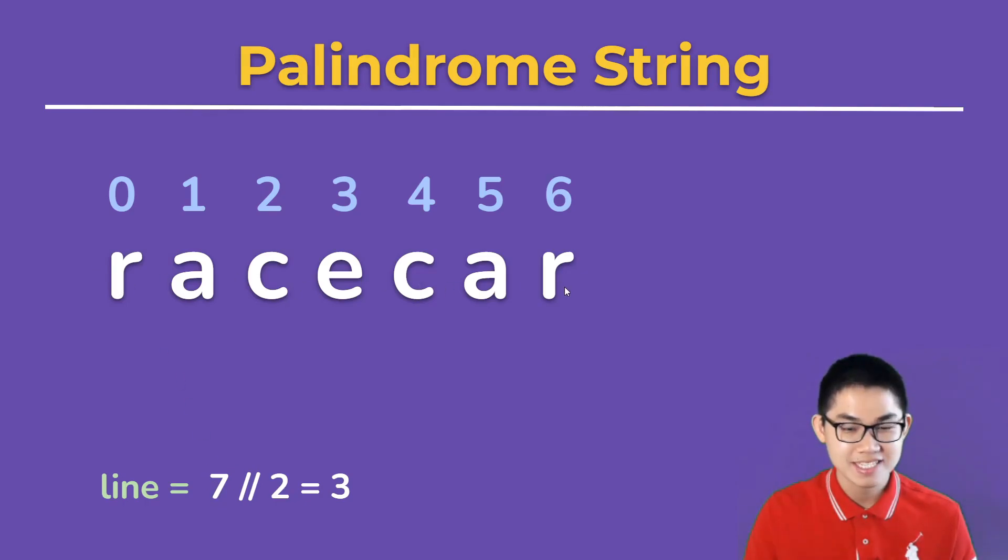Then we floor divide by 2. So what is floor divide? 7 divided by 2 gives you 3.5, and 3.5 rounded down gives you 3. So that's basically what floor divide is. The line is 3, so we're going to put the line onto the first 3 letters.